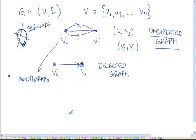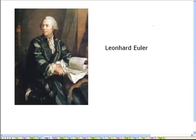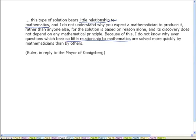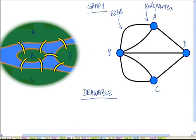And the Königsberg graph is actually a multi-graph, because as you can see here, there are multiple edges between the same pair of vertices. There are two edges between A and B, two between B and C, and so on.